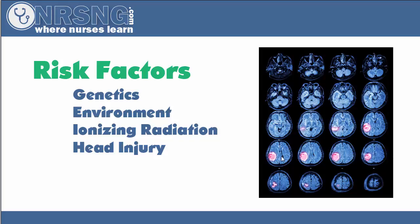They can be benign or malignant. Benign, of course, means it's not cancerous, where malignant means that it would be cancerous. And like we talked about in the intro, they can be primary or secondary. Primary meaning that they originated within the brain, or they can be secondary, meaning that the tumor growth metastasized from a location outside of the brain.